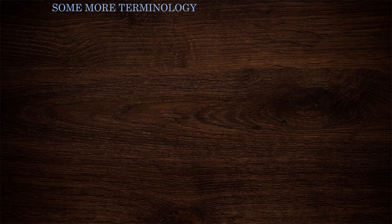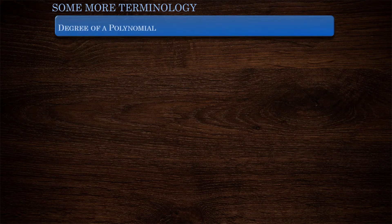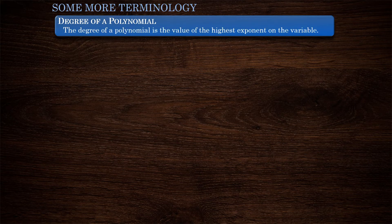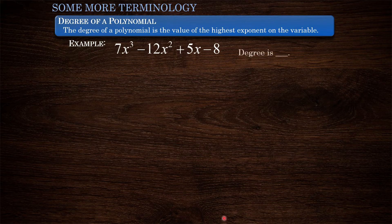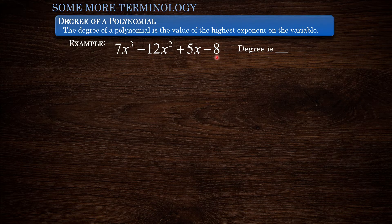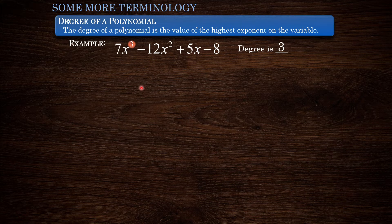We'll finish with just a little bit more terminology, starting with the degree of a polynomial. What is the degree of a polynomial? Well, it's just the value of the highest exponent on the variable. So here's an example: we have the polynomial expression 7x cubed minus 12x squared plus 5x minus 8. To find the degree, we are looking for the highest exponent on x, and notice it is 3. So the degree of this polynomial is 3.